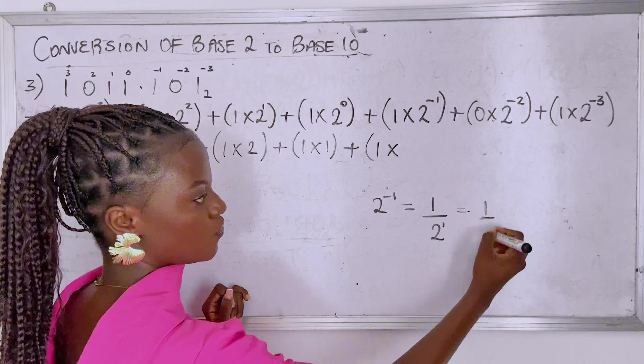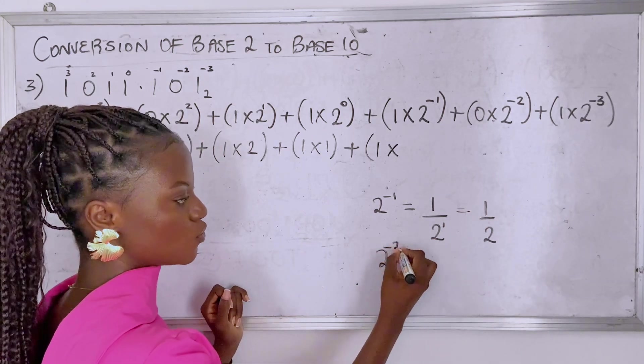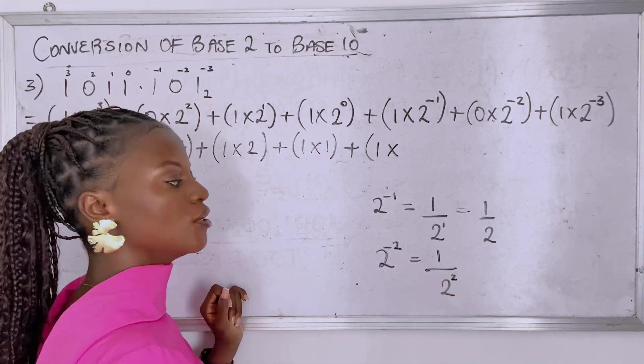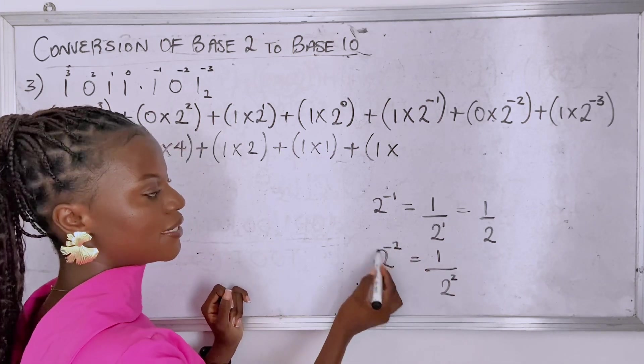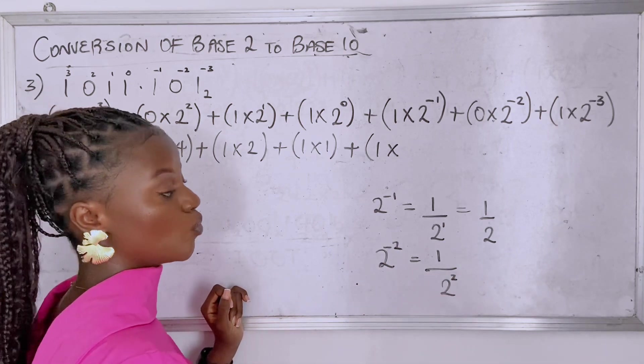Two to the power of minus two means one over that thing. The negative makes it reverse, so we don't have the negative anymore.